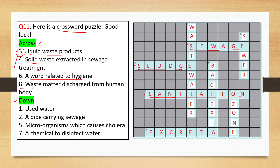Number 8 across - waste matter discharged from human body - the answer is excreta, E-X-C-R-E-T-A. For the down clues: number 1 - used water - the answer is wastewater, W-A-S-T-E-W-A-T-E-R. Number 2 - pipe carrying sewage - the answer is sewer, S-E-W-E-R.